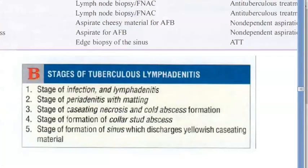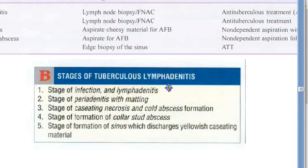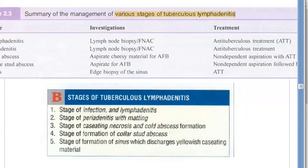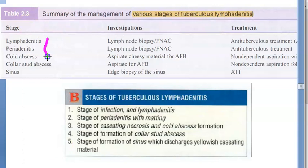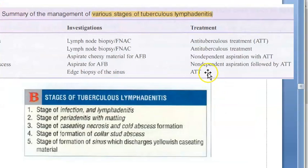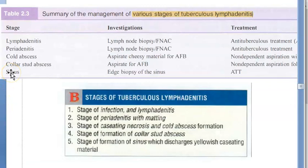The stages of tuberculosis lymphadenitis are: stage of infection, lymphadenitis, periadenitis with matting, caseating necrosis, cold abscess formation, collar stud abscess, and sinus with discharge of yellow caseating material. At each stage, anti-tubercular treatment is given. For cold abscess, non-dependent aspiration is added. If the sinus has already drained, anti-tubercular treatment is continued.